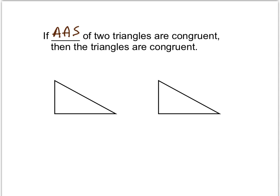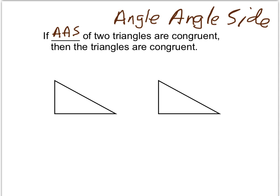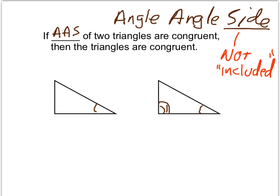One final theorem is called AAS, or angle-angle-side. For this theorem, we want to make sure that the side we're talking about is not the included side. So if we have these angles congruent and these angles congruent, and if these sides were congruent, then we would follow angle-angle-side. It's kind of like the order in which you see the things: angle-angle-side.